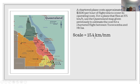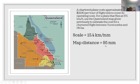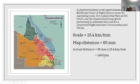First, our scale is 15.4 kilometers per millimeter. We measure the route and get 95 millimeters. To convert to kilometers, we multiply: actual distance = 95 times 15.4, which gives us 1460 kilometers. So now we've got the distance.